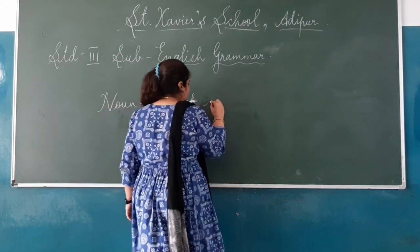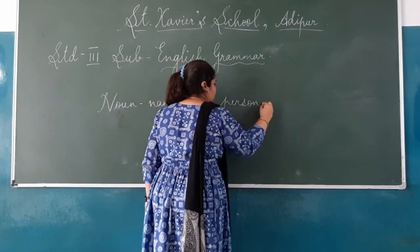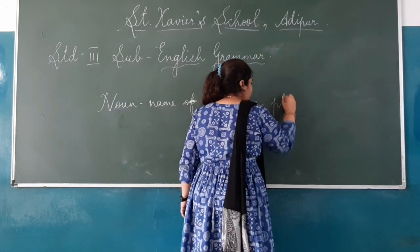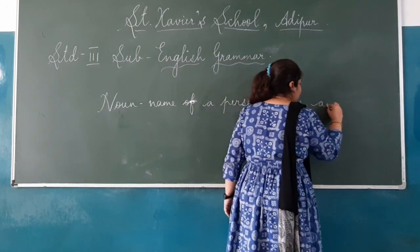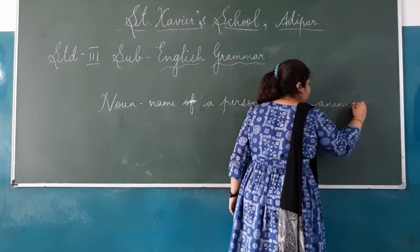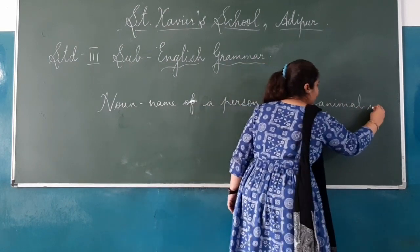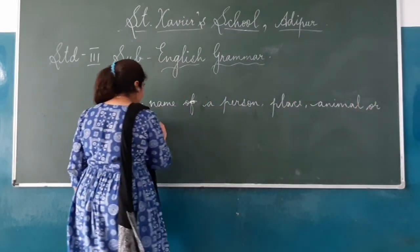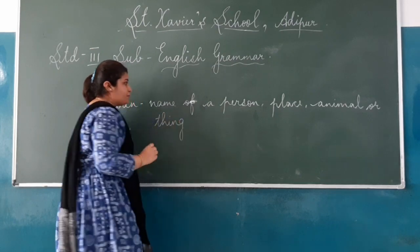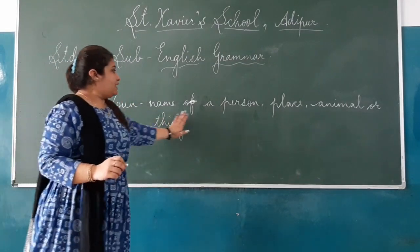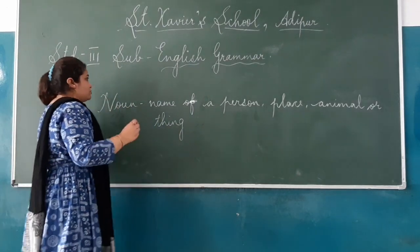Noun is the name of a person, place, animal, or thing. This is a noun. So noun means name of a person, place, animal, or thing.